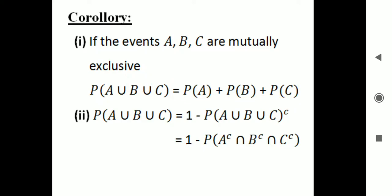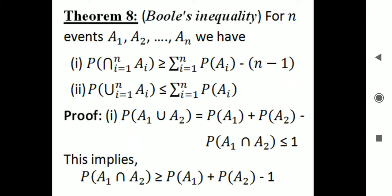We will now learn the complementation. Probability of A complement equals 1 minus probability of A. For three events, probability of A union B union C complement, using De Morgan's law, equals 1 minus probability of A complement intersection B complement intersection C complement.